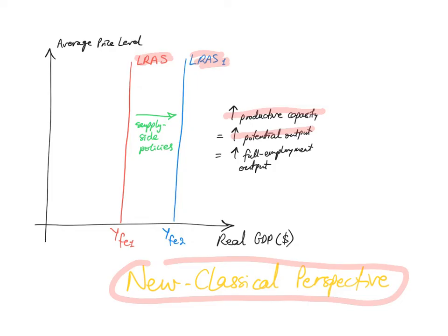Actual output is the level of output that the economy is actually producing. Potential output is the level of output that the economy is capable of producing. This also means there has been an increase in the full employment level of output, YFE.